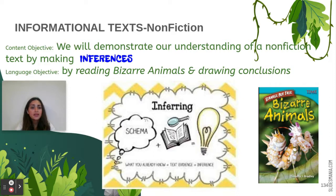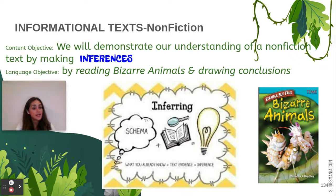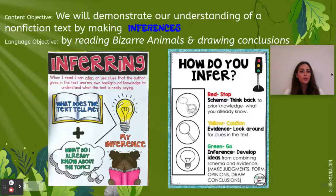Today we're going to be inferring. You're going to use your schema, which is what you already know, and text evidence to make an inference — a new conclusion, a new idea. When we infer, we're going to use clues that the author gives us and our own background knowledge to understand what the text is really saying.